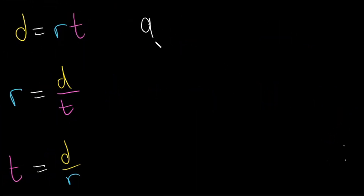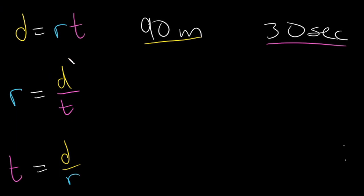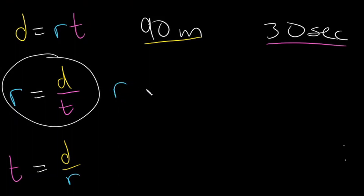Let's say you run 90 meters in 30 seconds and you want to know your average speed. 90 meters is our distance unit, so I'll underline that in yellow. 30 seconds — seconds is a time unit, so I'll underline that in pink. We have distance and time, so we need to solve for our rate. Let's use this formula.